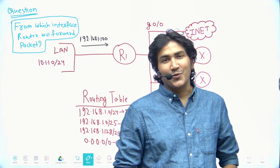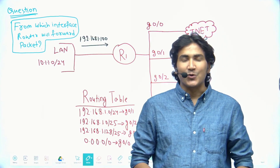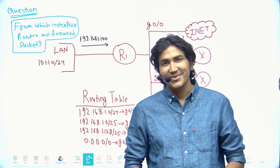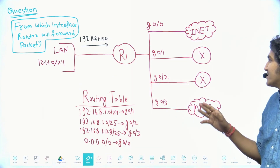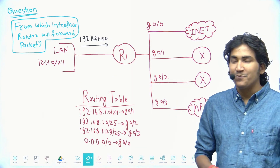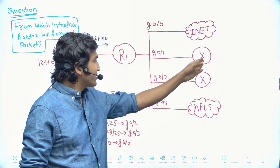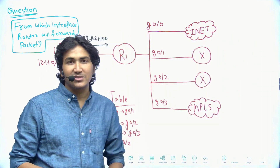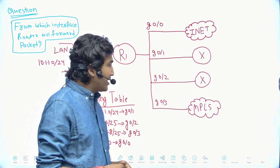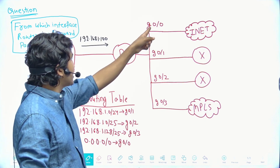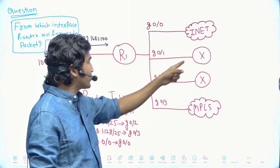Welcome to the scenario-based network engineer interview question and answer series. In today's scenario, there are several routers: R1, an internet router, two additional routers, and an MPLS router. R1 is also connected with a LAN.